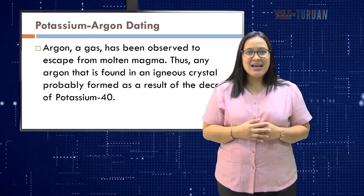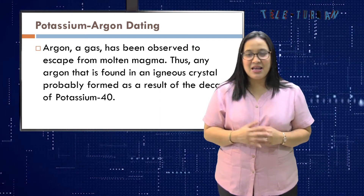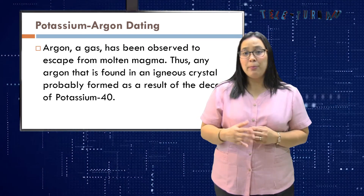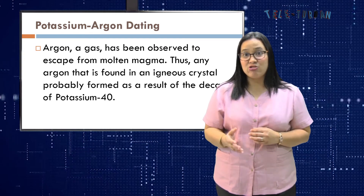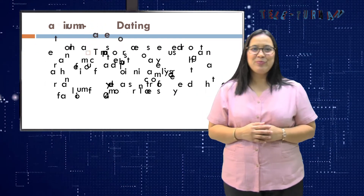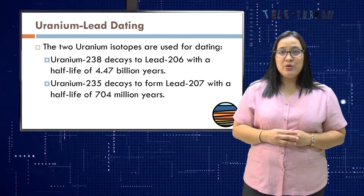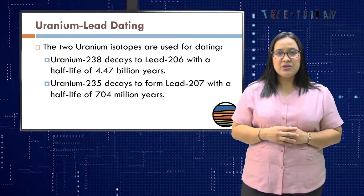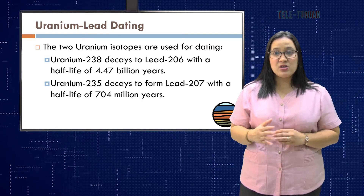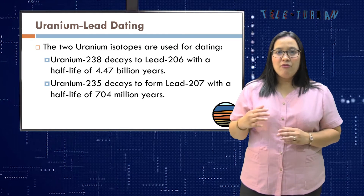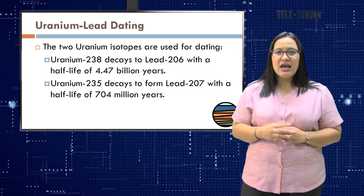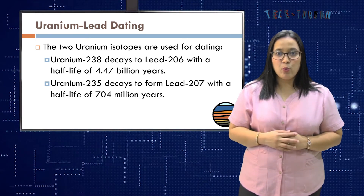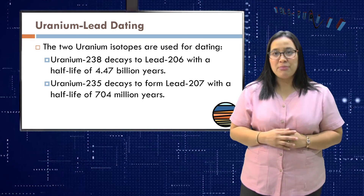Argon, a gas, has been observed to escape from molten magma. Thus, any argon found in an igneous crystal probably formed as a result of the decay of potassium-40. For uranium-lead dating, two uranium isotopes are used: uranium-238, which decays to lead-206 with a half-life of 4.47 billion years, and uranium-235, which decays to form lead-207 with a half-life of 704 million years.